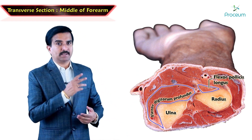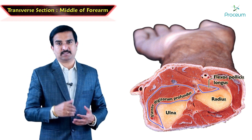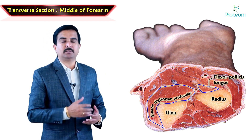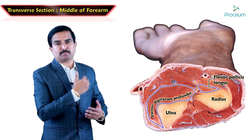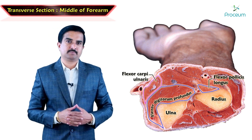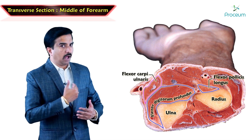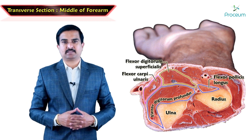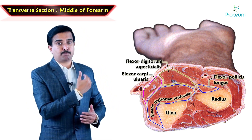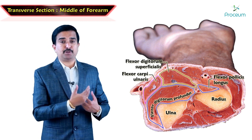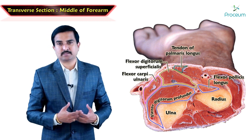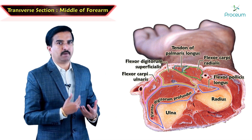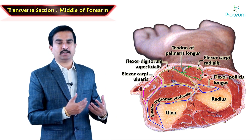We can also see four superficial muscles. Named from medial to lateral: the first and medial-most muscle is the flexor carpi ulnaris, which is present on the ulnar aspect of the forearm; then the flexor digitorum superficialis, which is superficial to the profundus muscle; then the tendon of the palmaris longus; and finally the flexor carpi radialis. These four muscles are well appreciated in this image.